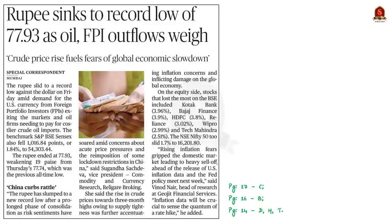The third article says that the rupee slid to a record low against the dollar. The slide happened due to demand for the US currency from foreign portfolio investors (FPIs) exiting the markets and oil firms needing to pay for costlier crude oil imports. The rupee ended at 77.93, weakening 19 paise from Thursday's 77.74, which was the previous all-time low. Using this article as an opportunity, we will see about FPI and the difference between FPI and foreign direct investment (FDI).